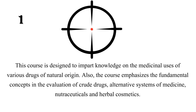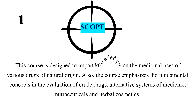This course gives us knowledge about medicines — how medicines can be prepared, the chemistry of medicines, pharmacological actions, anatomy and physiology of the human body, and what diseases are mostly present in our society and how to handle and treat them. Pharmacognosy is defined as the systematic and scientific study of structural, physical, chemical, and biological characters of crude drugs, along with their methods of cultivation, collection, and preparation for the market. This course is designed to impart knowledge on the medicinal uses of various drugs of natural origin.